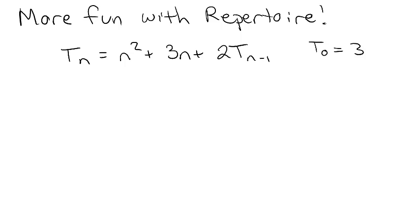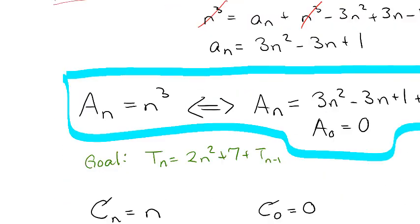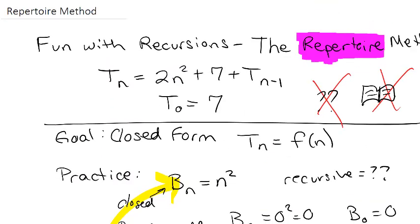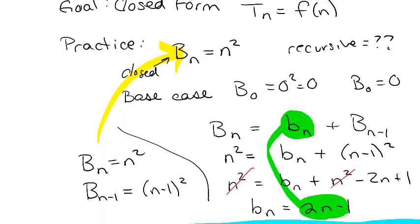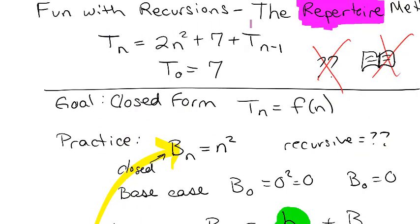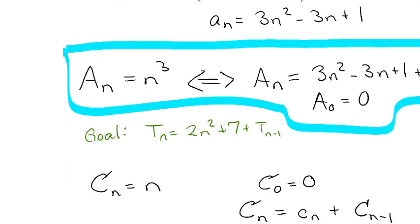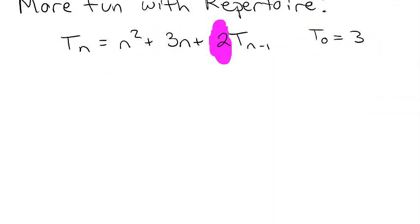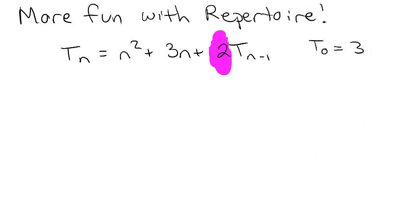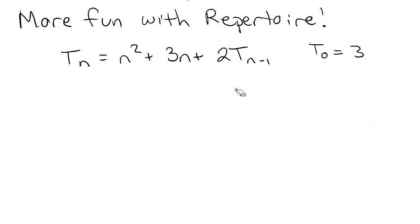We've already done a previous video on this. So we were doing a recursion thing and trying to find a closed form. In the previous example we just had a 1, but now we're doing something times 2 times the previous term, and that makes things super duper funner.